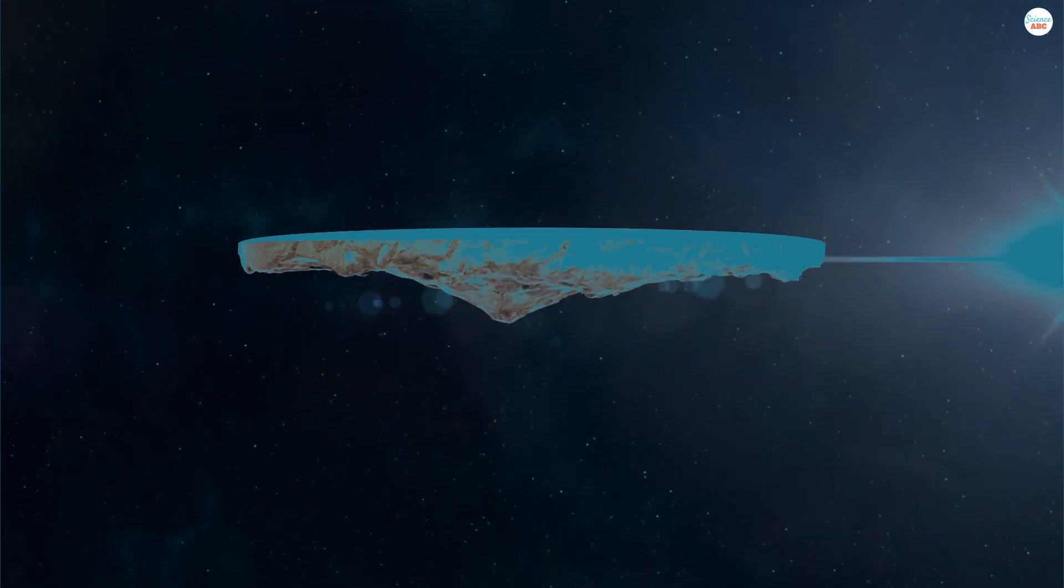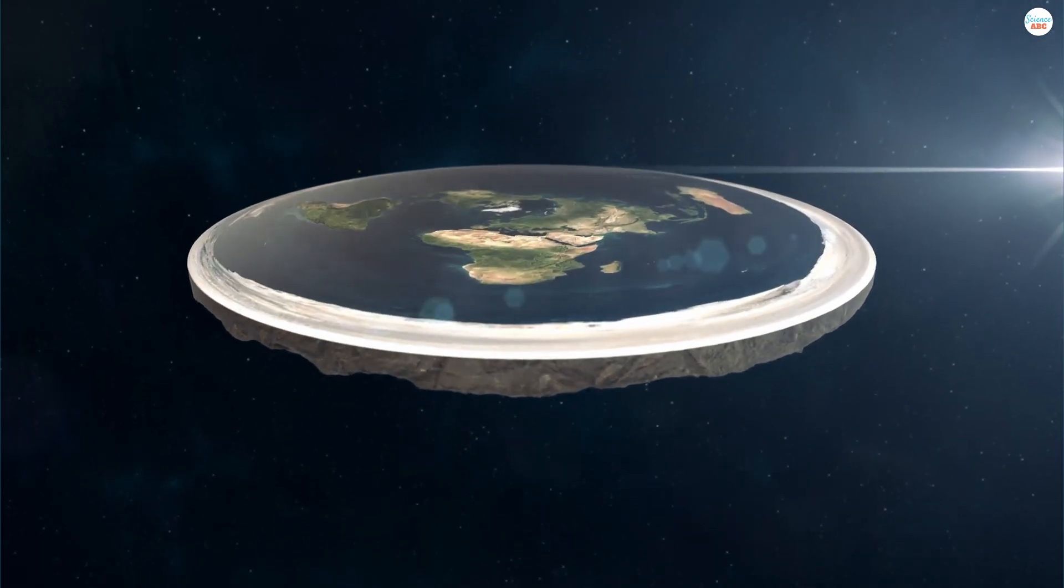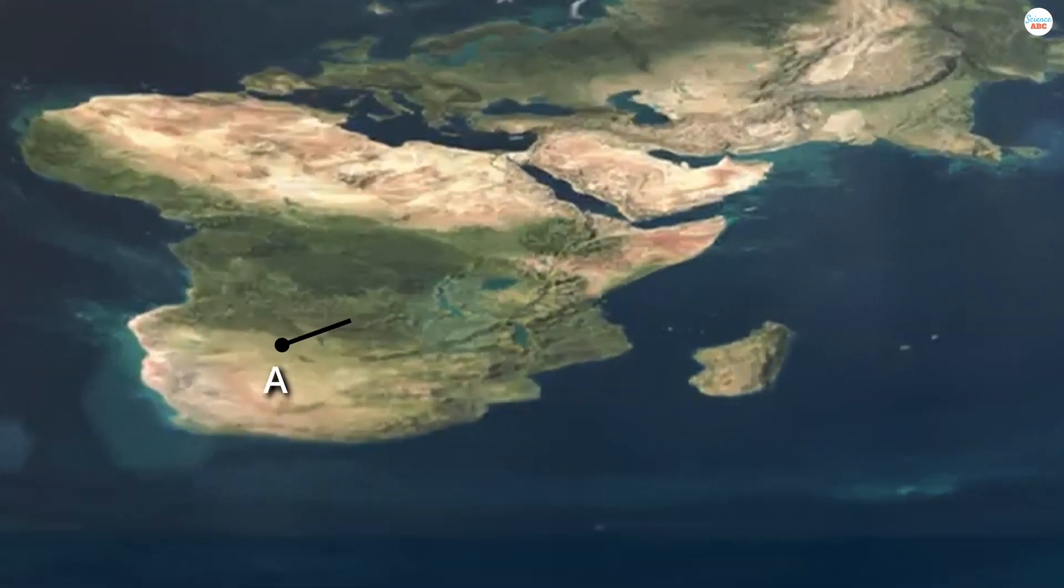For example, if we were living on a flat earth, which we don't, then yes, a straight line would be the shortest distance between points A and B.